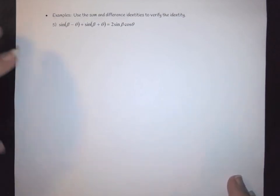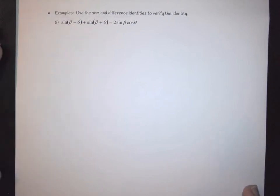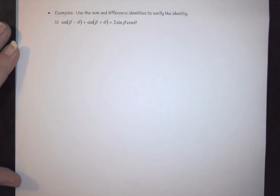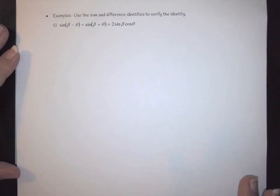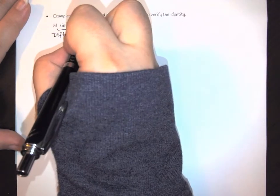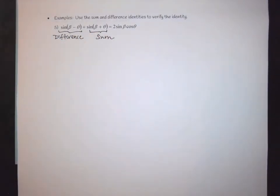Looking at this first example, I have the sine of beta minus theta plus the sine of beta plus theta equals two sine of beta cosine of theta. Notice that the first term is a difference, whereas the second term is a sum. I want to take each of these and expand them out to see if I can combine anything together or cancel.